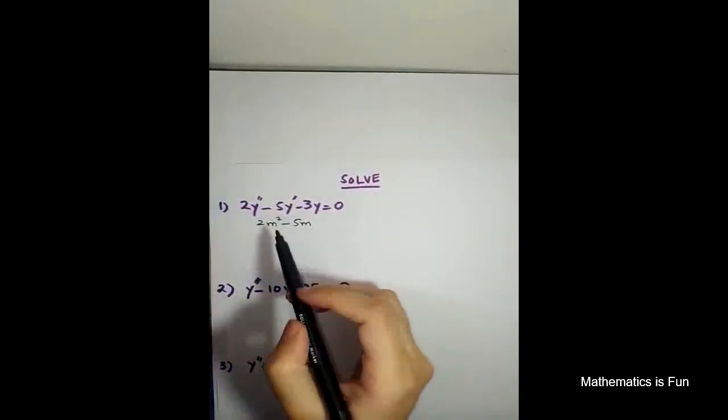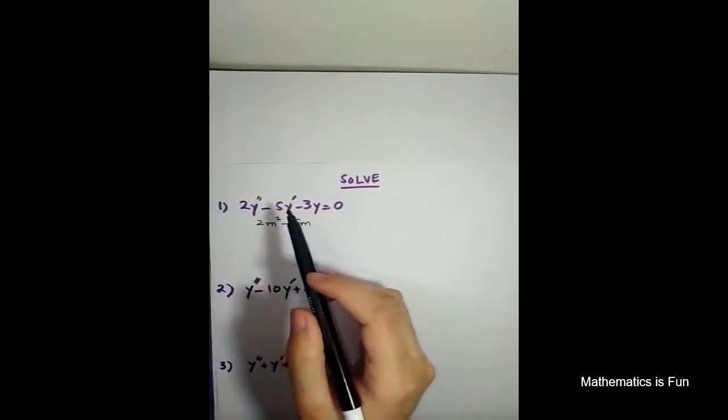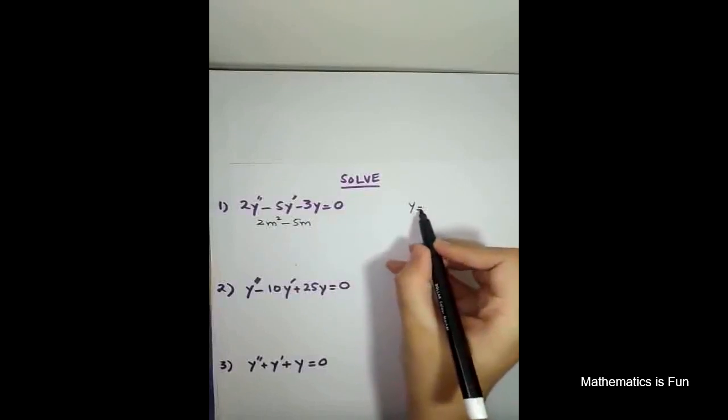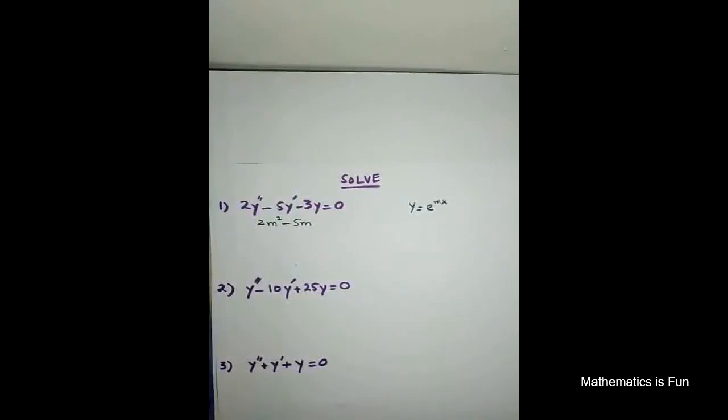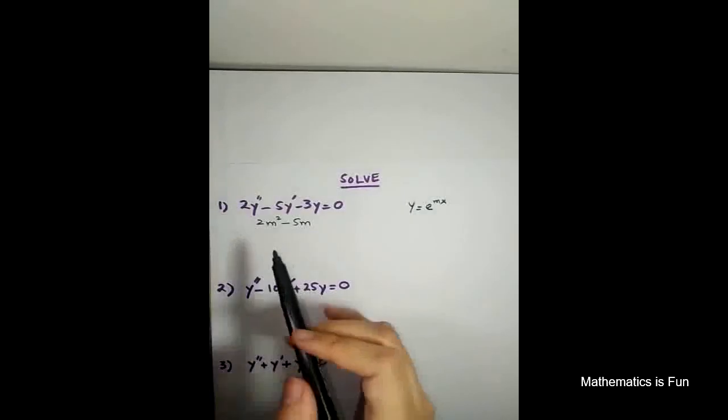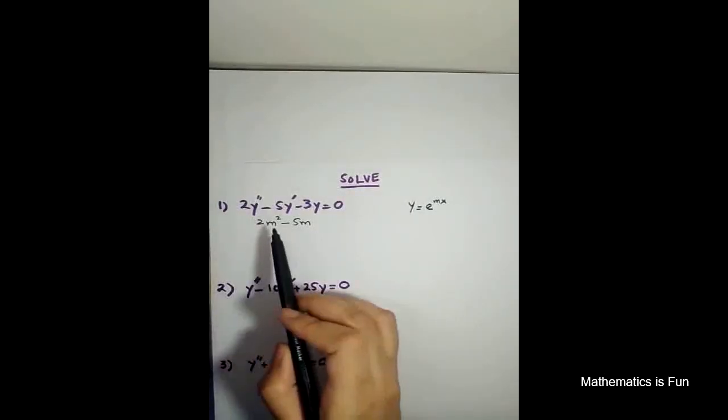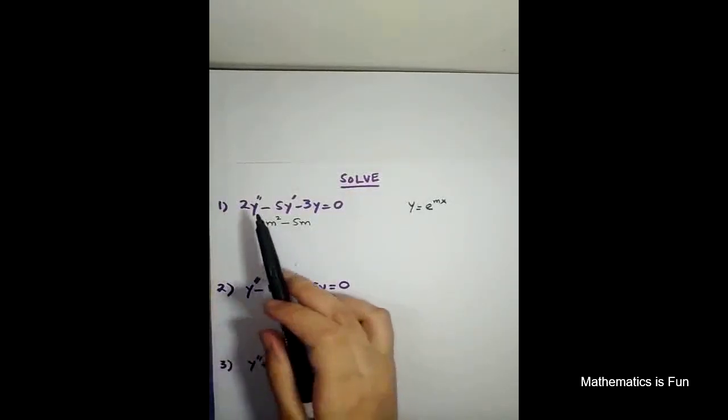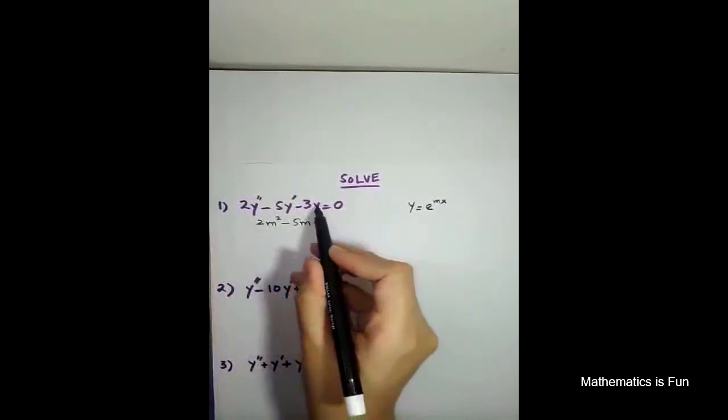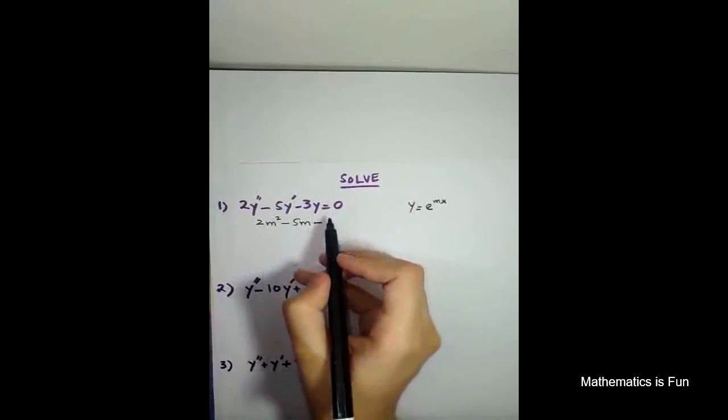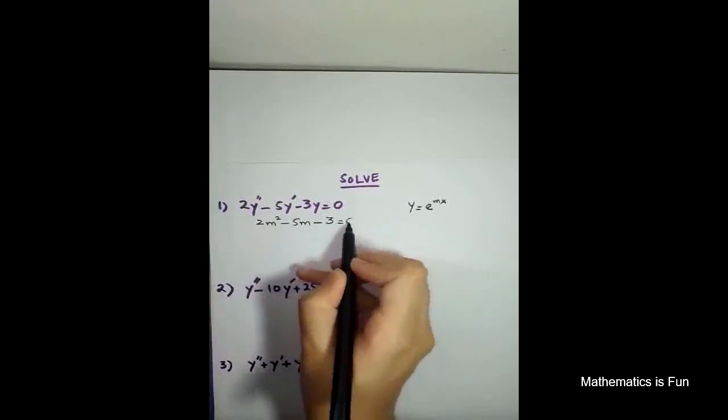So replace this because y double dash has the derivative. If y solution is y equals to e to the power mx, then y dash is m into e to the power mx, and y double dash is m square e to the power mx. e to the power mx eventually gets common. So you don't need to write e to the power mx. Just you have to replace y double dash, replace m square in place of y double dash, and y dash has m, and y you don't need to write anything with. So that is equal to 0.